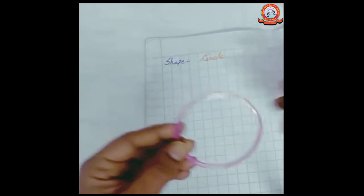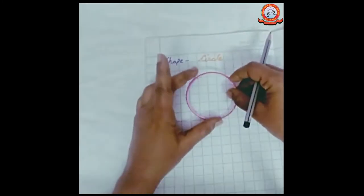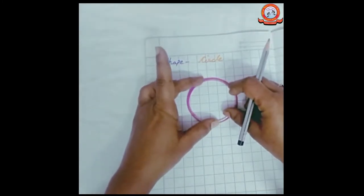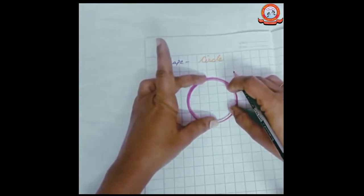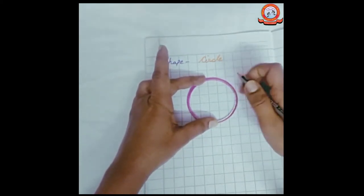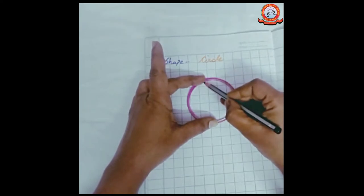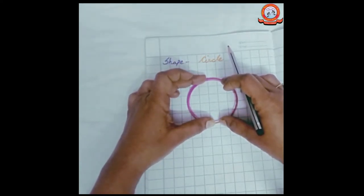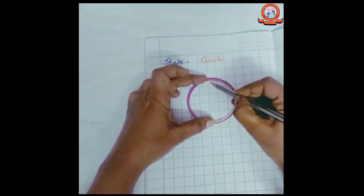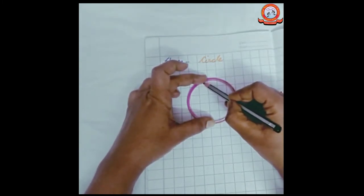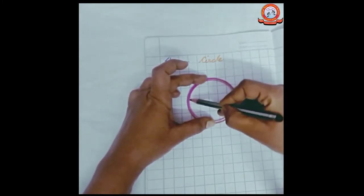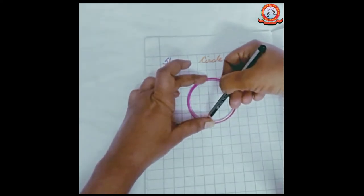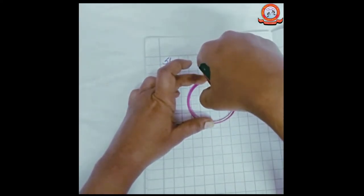So how to draw? Put the bangle on the paper and take a pencil and we have to draw from inside. Like this. We have to hold it well. We don't move it. We will keep the pencil in it and we will draw it well. Okay?